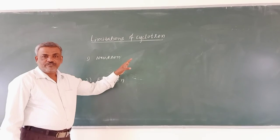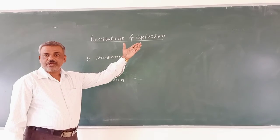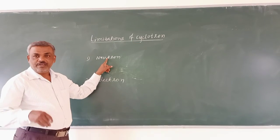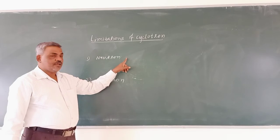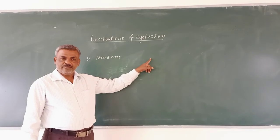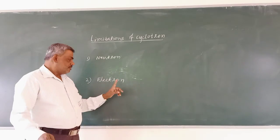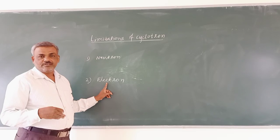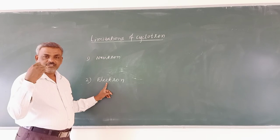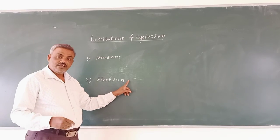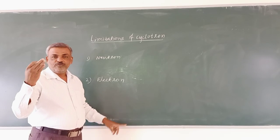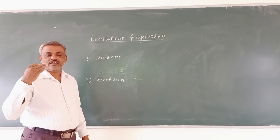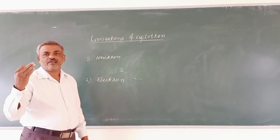Limitations of the cyclotron: Neutrons, being electrically neutral, cannot be accelerated. Electrons, having very small mass, reach very high speeds even with small energy, making them difficult to accelerate effectively in a cyclotron.